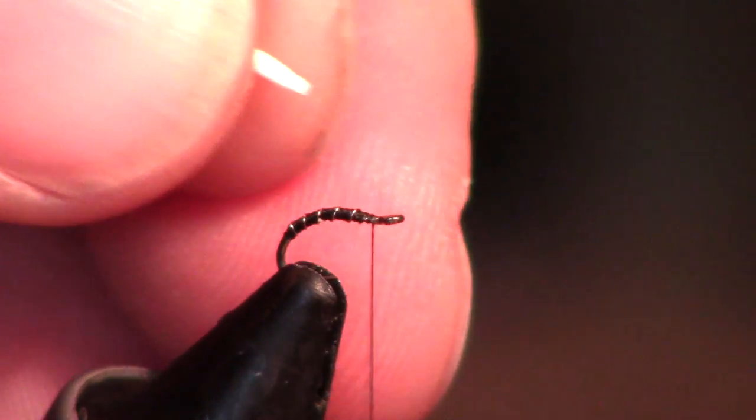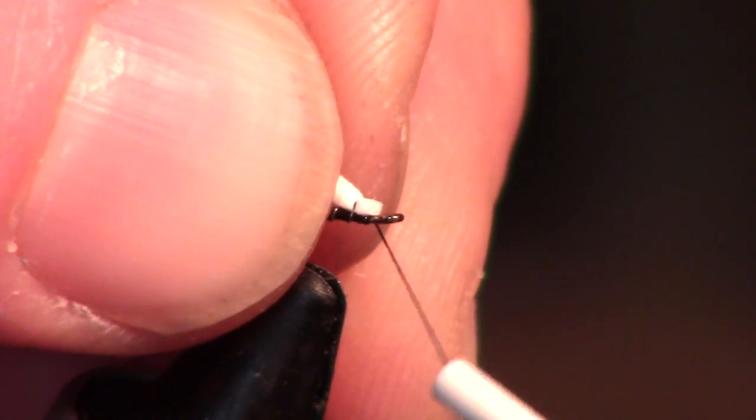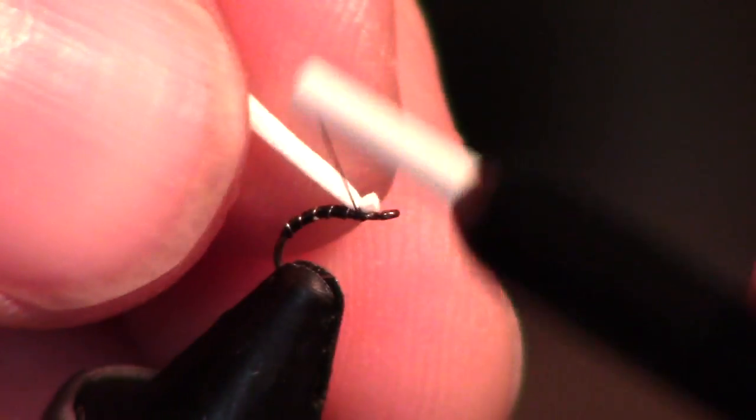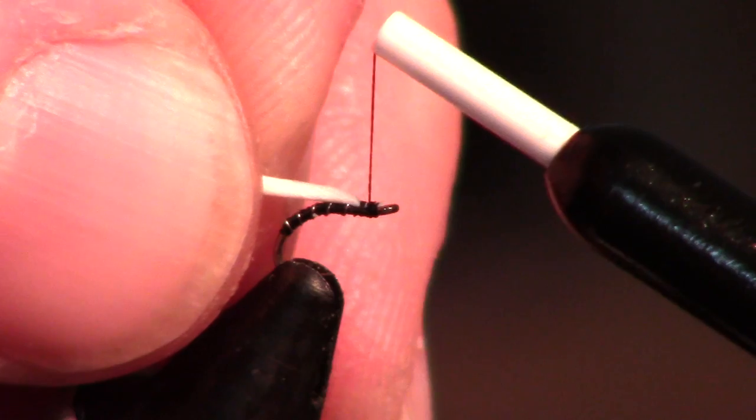You take your foam here, you want a very small, thin piece of it, sitting right on top. You don't want this over the end of the hook eye.